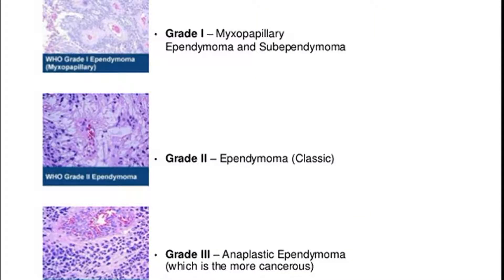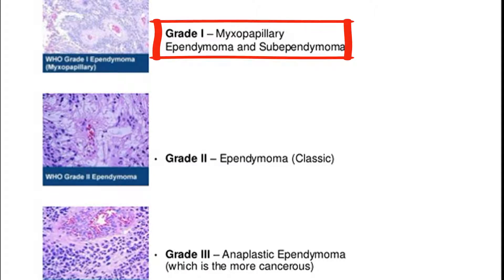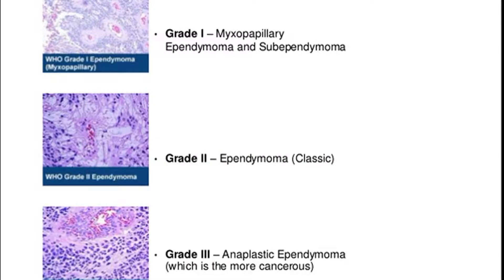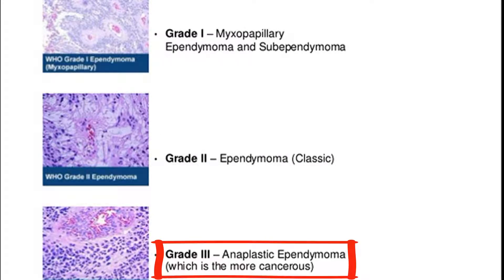There are three grades of ependymomas. Grade 1 is myxopapillary ependymoma and sub-ependymoma. Grade 2 is the classic ependymoma, and grade 3 is the anaplastic ependymoma, which is more aggressive and least differentiated.